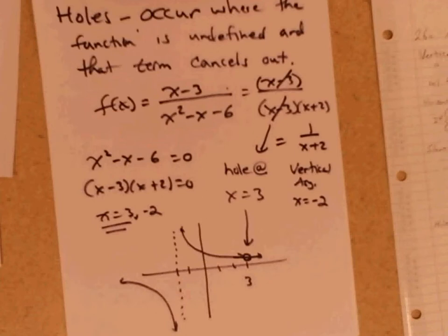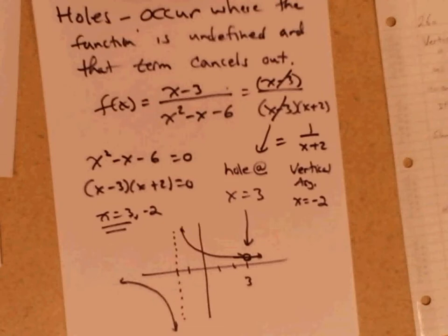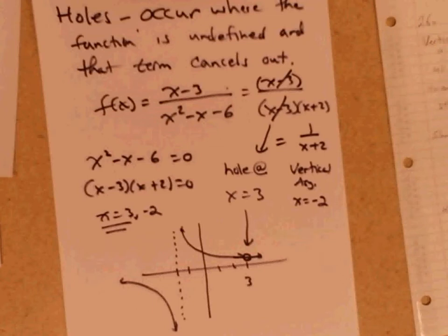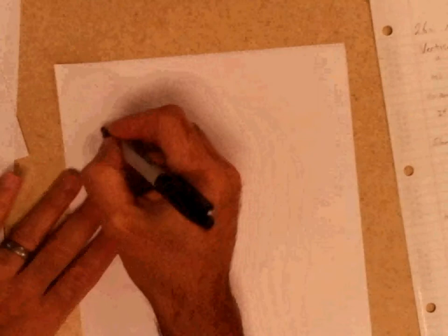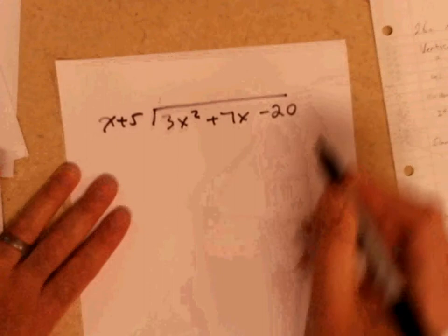That was a lot of stuff. Let me make up another problem since you haven't done long division before. Let's just do a long division problem together — once your brain wraps around it, you'll be okay. So let's put x plus 5 on the outside and 3x squared plus 7x minus 20 on the inside. The goal is to cancel out the leading term each time.